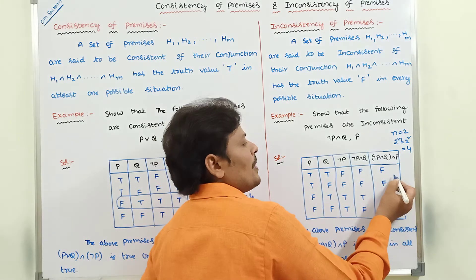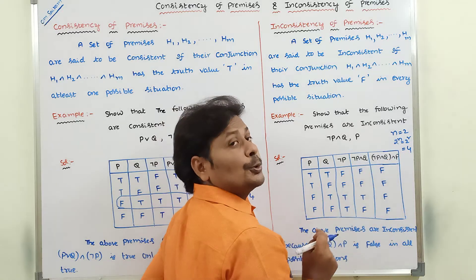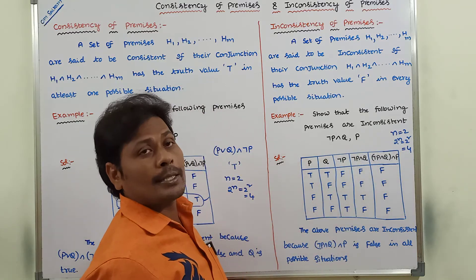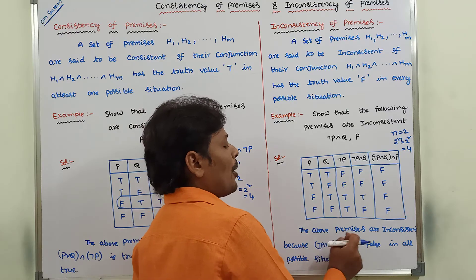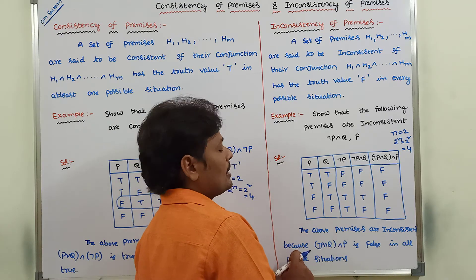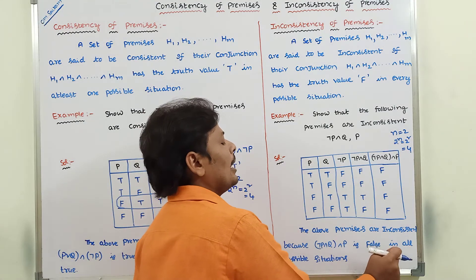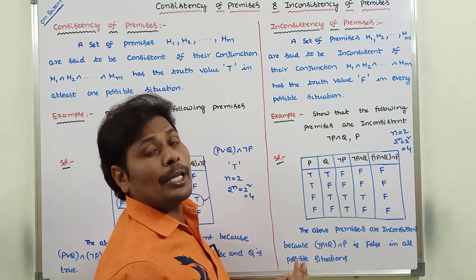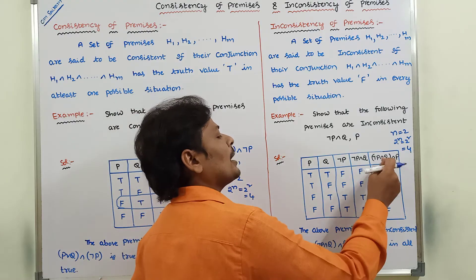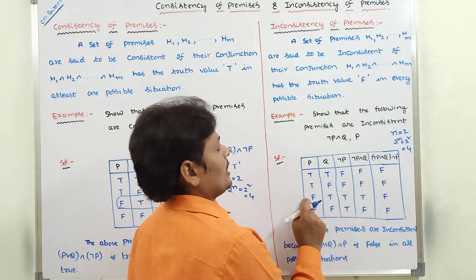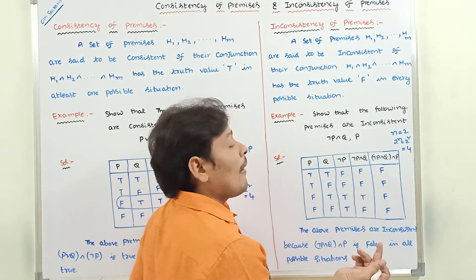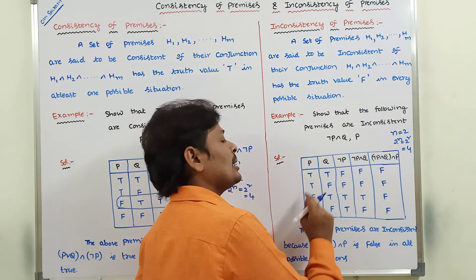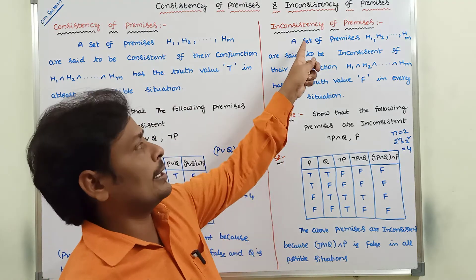In all possible situations, the conjunction of the two premises contains only false value. Hence we can say that these two premises are said to be inconsistent. The above premises are inconsistent because the conjunction of the two premises is false in all possible situations — that is, in all possible truth values of the statement variables. There are four possible situations.